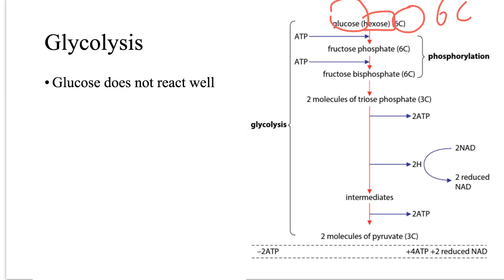Then the fructose bisphosphate, which breaks down to produce two molecules of triose phosphate. So that's the first stage of glycolysis.